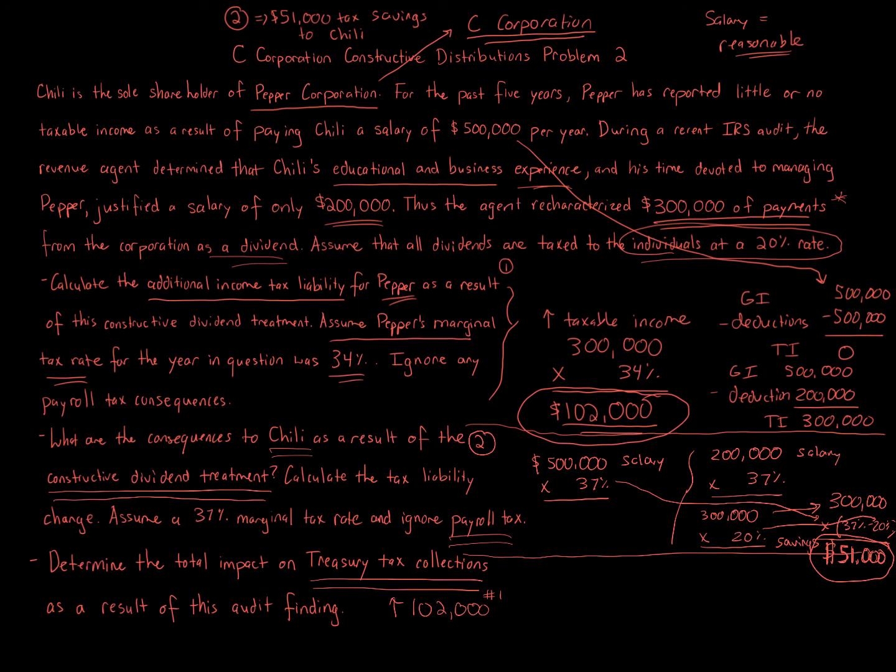And number two, Chili's taxes went down, decreased by $51,000, so basically just wants to know net, what's the result. Back in the problem, I probably should have highlighted this earlier, we're doing everything for the year. That was the focus for the year in number one, number two, and the last question, the third question, that's also going to be—we take increase of $102,000, a decrease of $51,000.